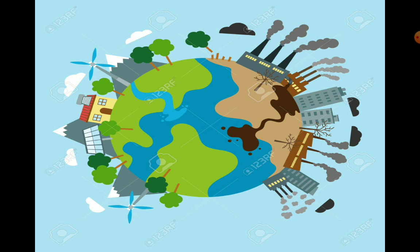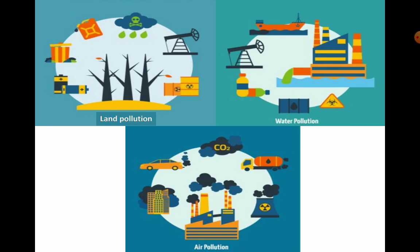Are we responsible for this or not? Let's get started. We have three kinds of pollution. The first one is land pollution, water pollution and air pollution. There are three types of pollution: land pollution, water pollution and air pollution.